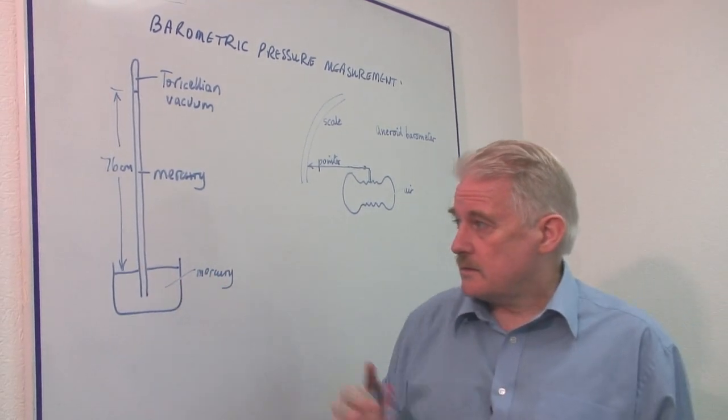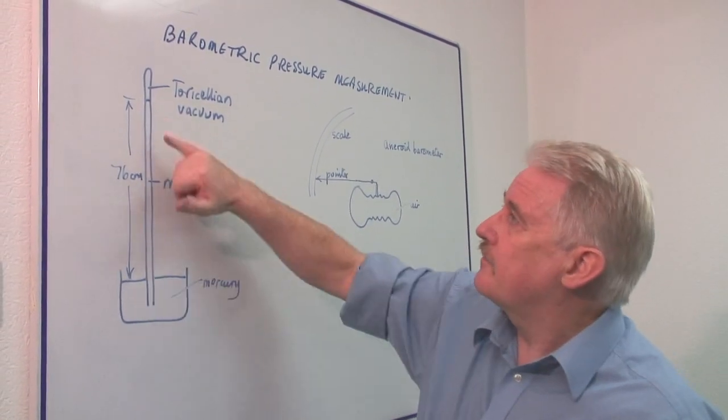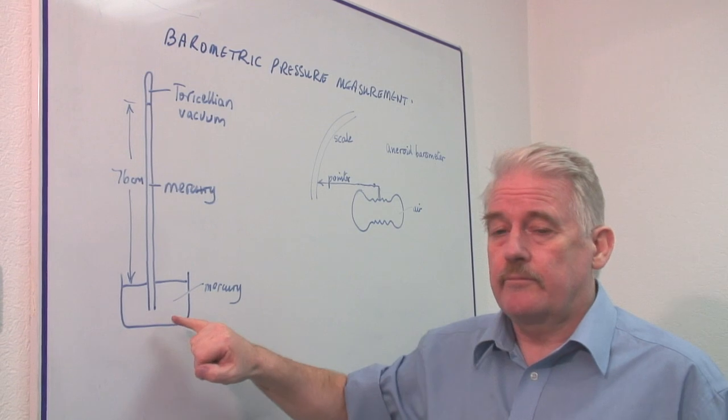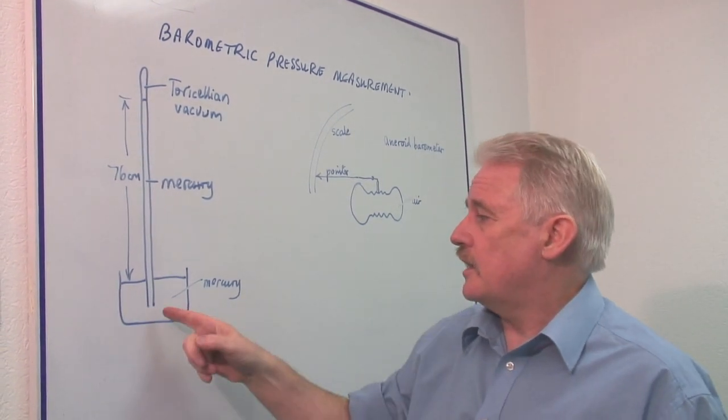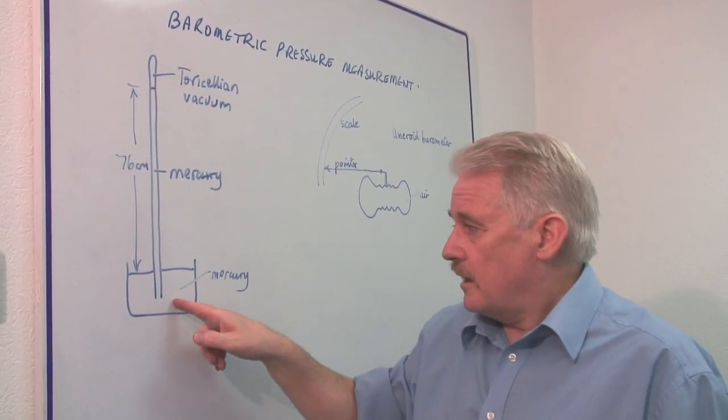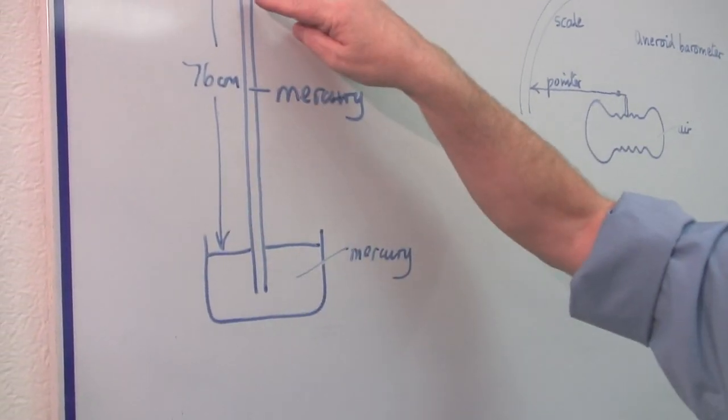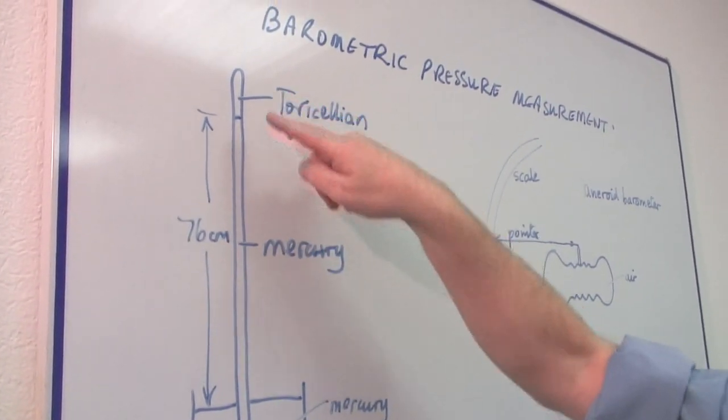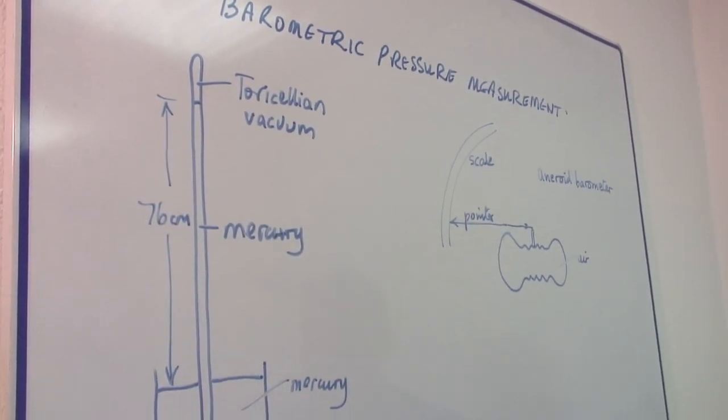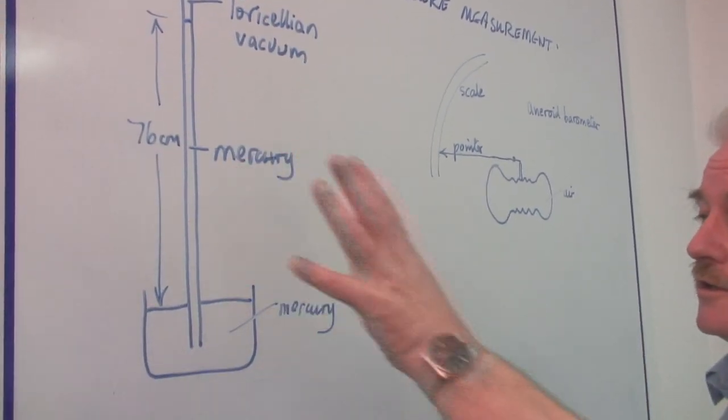To make this you have to completely fill a tube with mercury and then you have to invert it into a bath of mercury ensuring that no air gets into this part of the tube. If air gets in here it doesn't work.